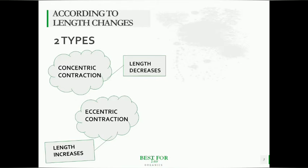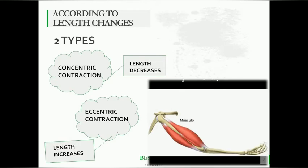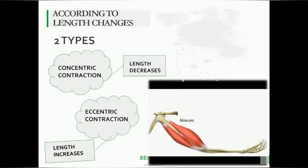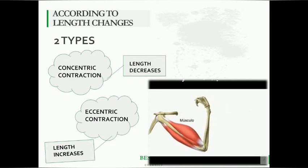I'll give you an example so you can easily understand. During elbow flexion, there is a concentric contraction of the biceps muscle and an eccentric contraction of the triceps muscle. During elbow flexion, the biceps is contracting so its length decreases, while the triceps lengthens — so we say there is an eccentric contraction of the triceps muscle. I hope that makes sense.